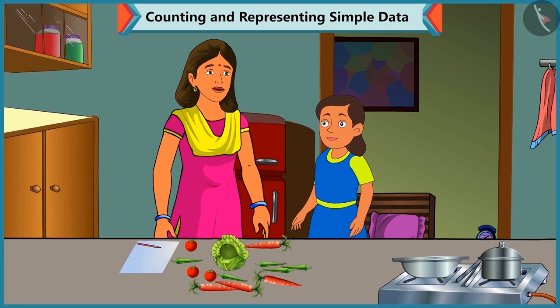First of all, we group the vegetables, and then we count them and then we write their numbers. Okay, Mummy.